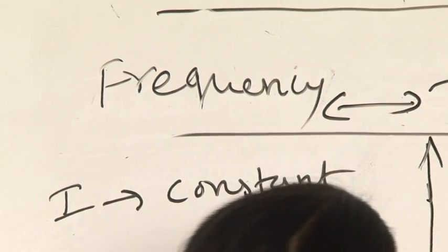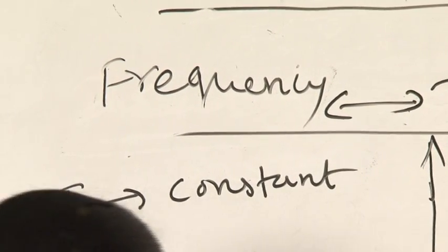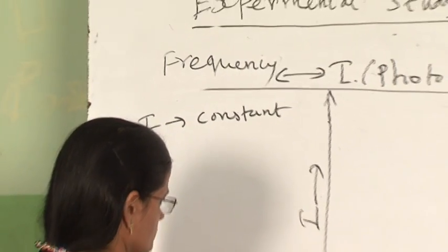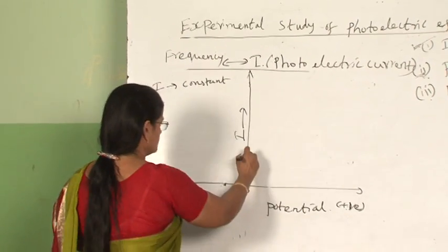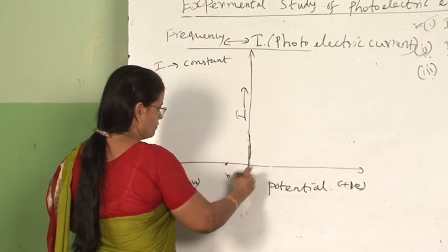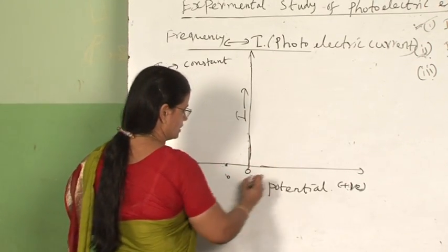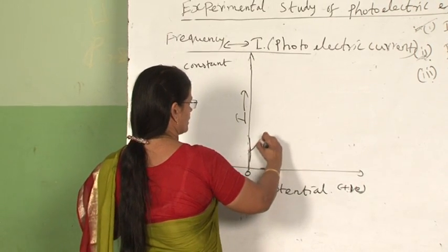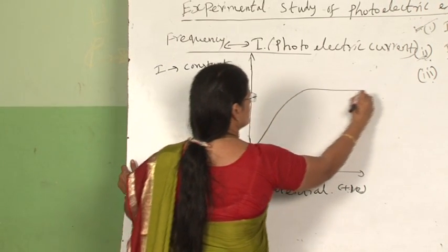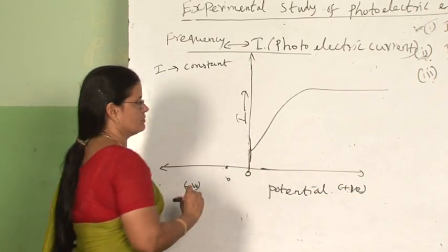When you keep the intensity constant, for positive potential, if you increase the positive potential applied on the collector plate, the photoelectric current will increase and saturation will be achieved.